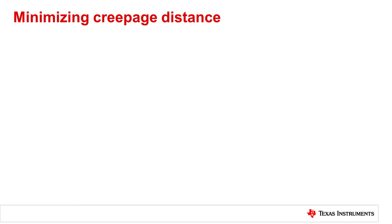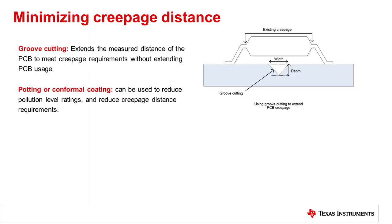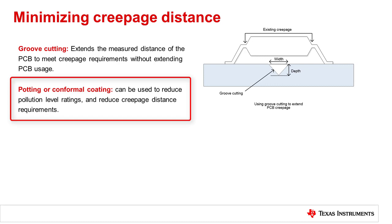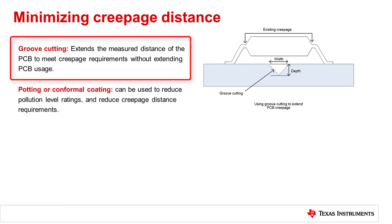It is worth noting that there are some techniques that have been used to reduce creepage and clearance requirements. For example, conformal coating or potting techniques involve the deposition of insulating polymer or other material over the printed circuit board and have historically been used to reduce pollution degree around the isolator. This reduces the requirement on creepage and clearance by eliminating the influence of pollutants. Other techniques, such as groove cutting, can be used to attain a lower PCB creepage distance. Groove cutting effectively extends the creepage distance.